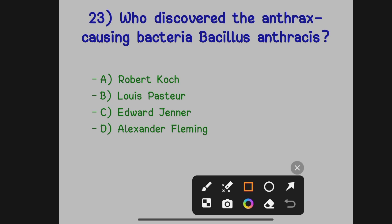Who discovered the anthrax-causing bacteria Bacillus anthracis? Option A: Robert Koch. Option B: Louis Pasteur. Option C: Edward Jenner. Option D: Alexander Fleming. The correct answer is Option A, Robert Koch — he discovered the anthrax-causing bacteria Bacillus anthracis.